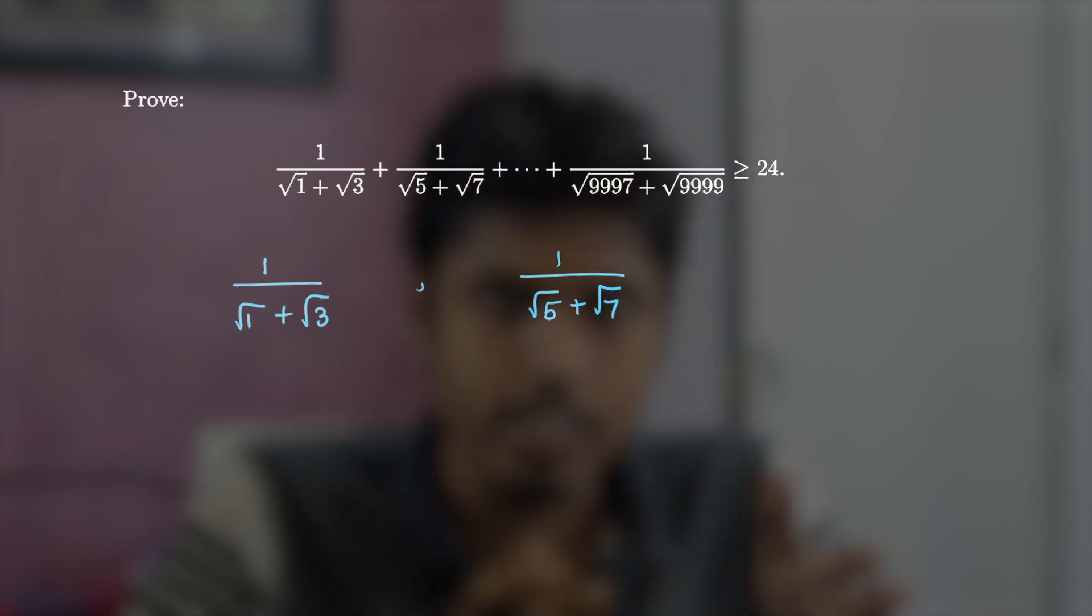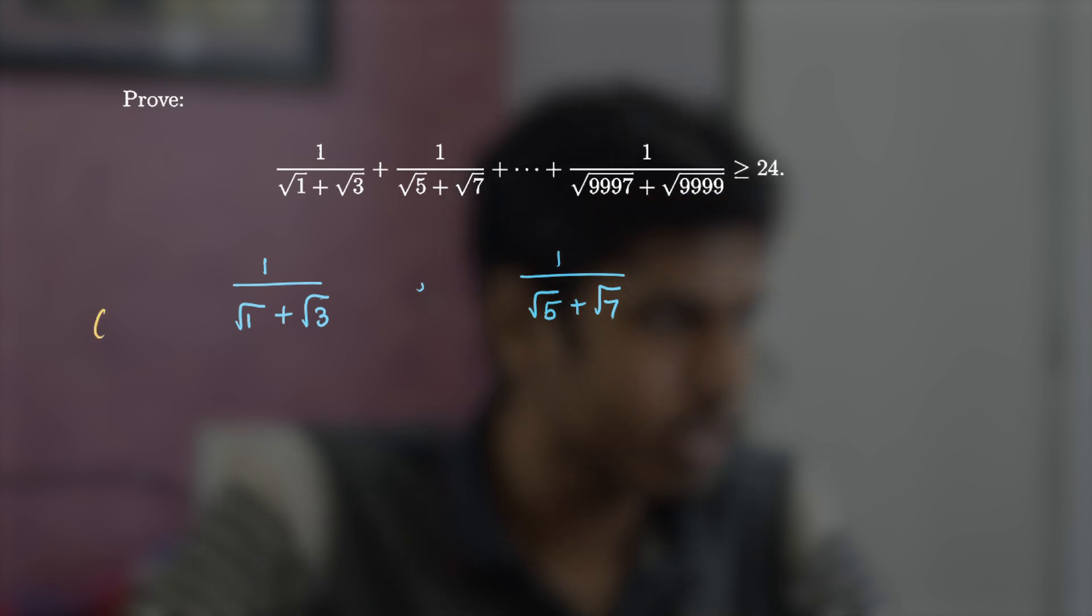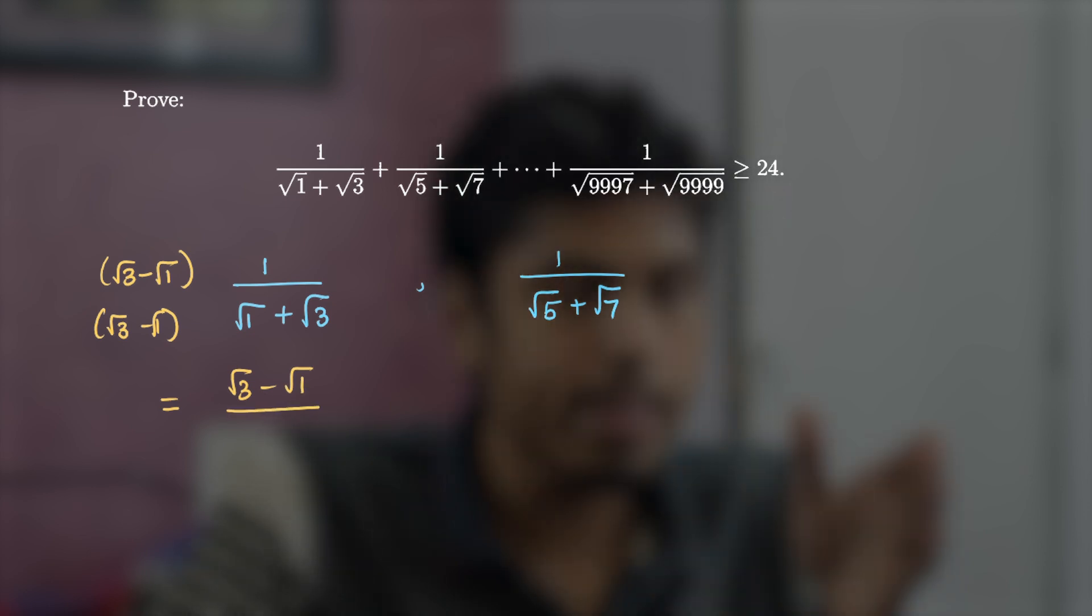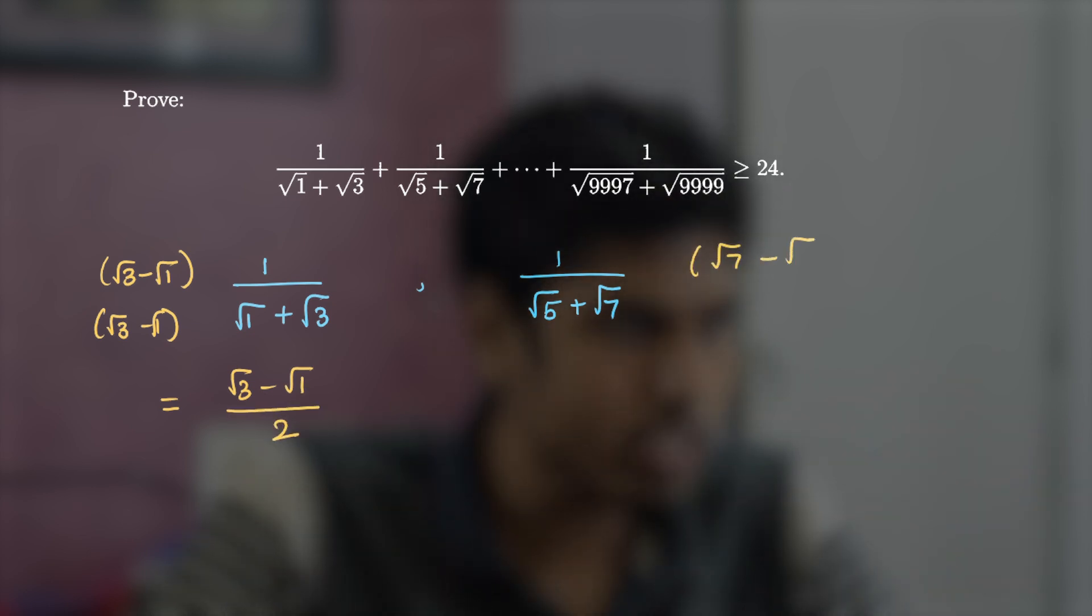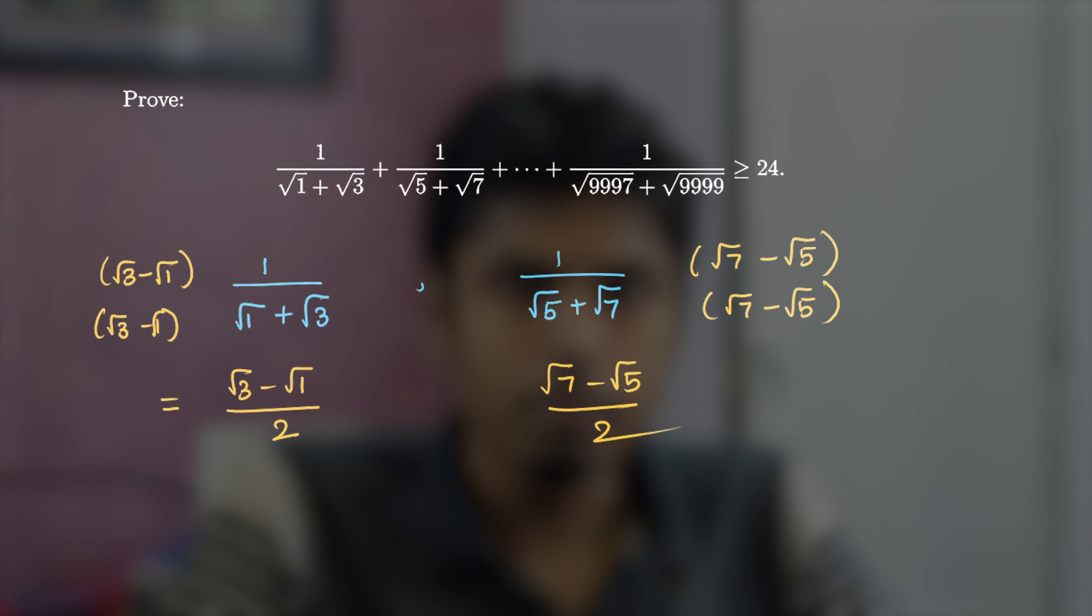Our intuition says that rationalize the denominator. If I do it directly, I would have to multiply root 3 minus root 1 both in the numerator and denominator. This gives us root 3 minus root 1 upon 3 minus 1, which is 2. Doing a similar rationalization in the second term gives us root 7 minus root 5 by 2. But there is a drawback in this procedure.